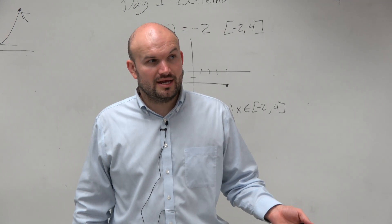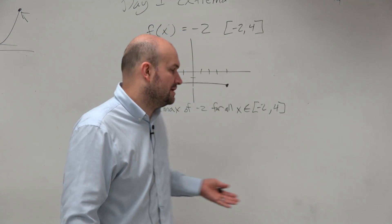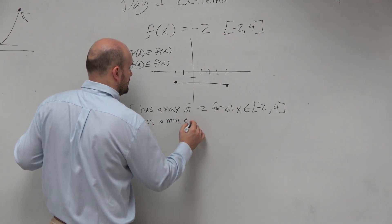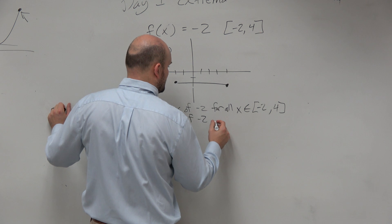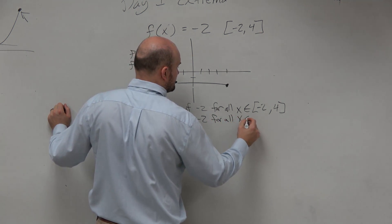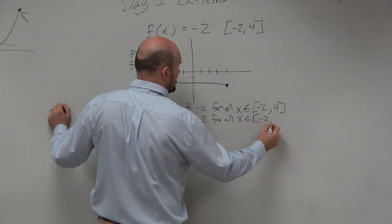So is there anything lower than negative 2? No, so we're good. So we could say f has a min of negative 2 for all x contained on the interval negative 2, 4.